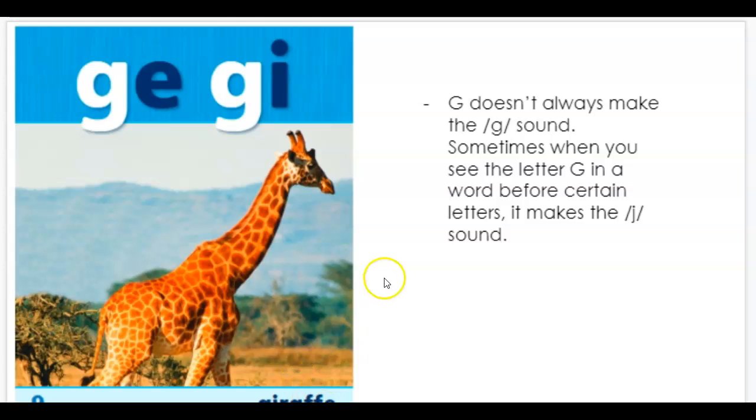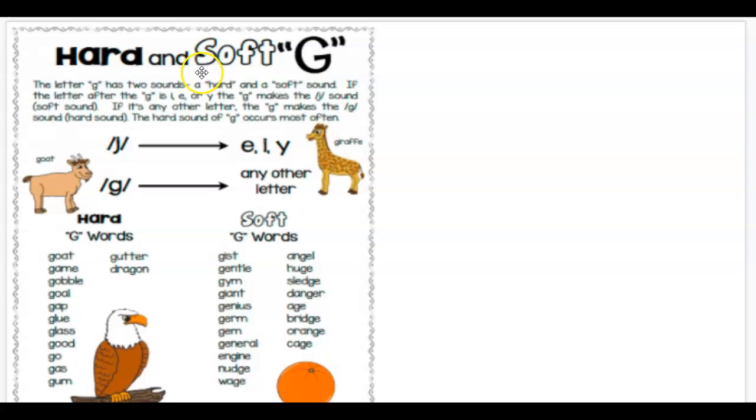And if you see, you can't really see it because it's cut off, but you can see the little dot right here. It says giraffe. And that is with an I after the G. So let's take a look at some hard G's and some soft G's.